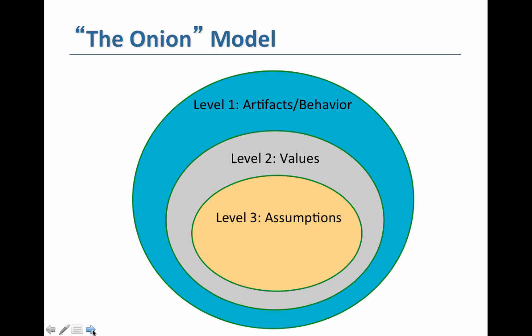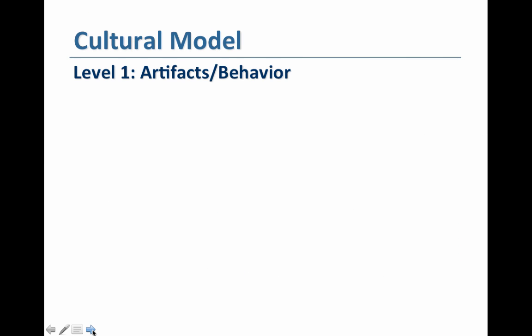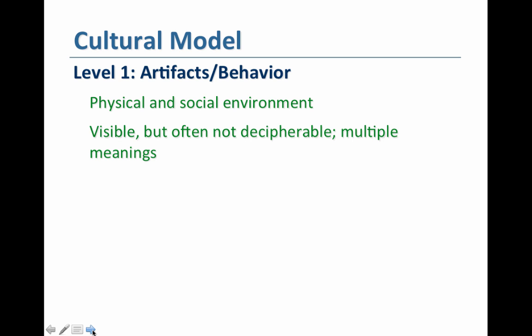We have a cultural model called the Onion Model by Schein — S-C-H-E-I-N. We can look at three different levels to help identify whether organizational culture is strong or weak. I'm going to walk through each one of these levels and how we can analyze that. The first level is looking at those artifacts or behaviors — the five different elements of culture we just went through.